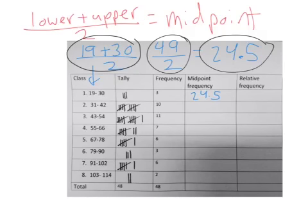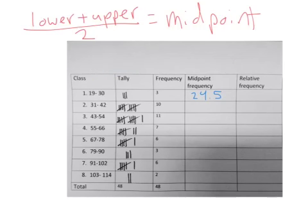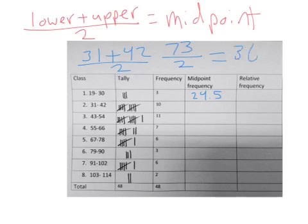Let's practice one more. To find the midpoint frequency for class 2, I'm going to add up my range, 31, plus 42, and then I'm going to divide that by 2. So I'm going to get 73 divided by 2. So my midpoint is 36.5. You follow that formula for every one of these midpoints.